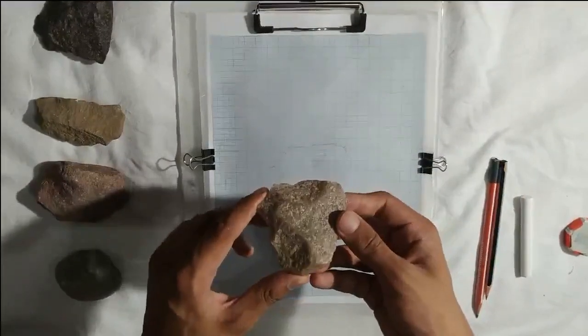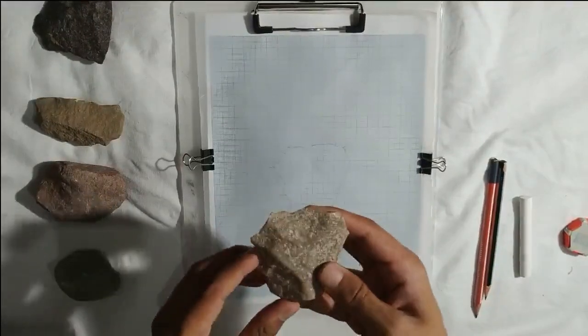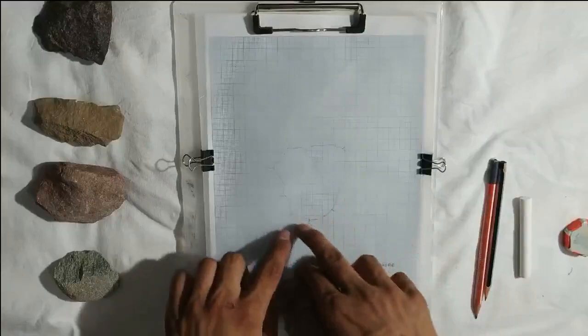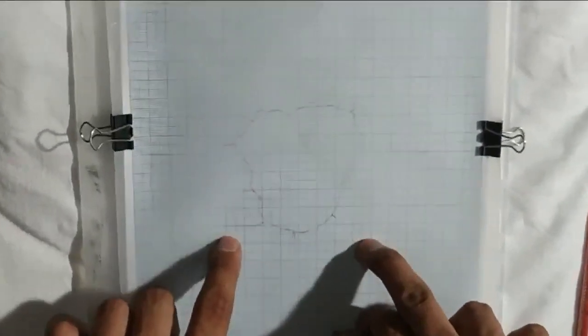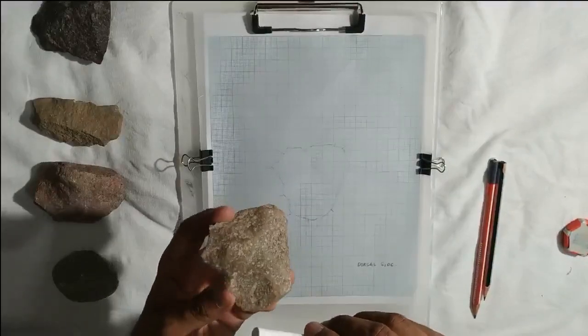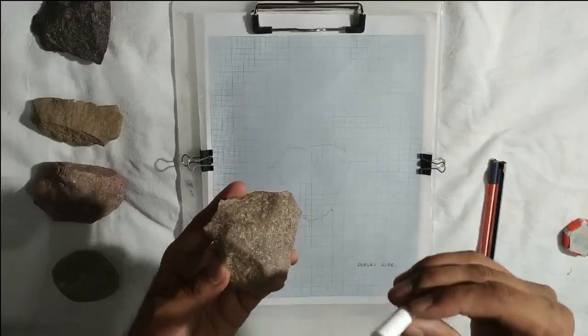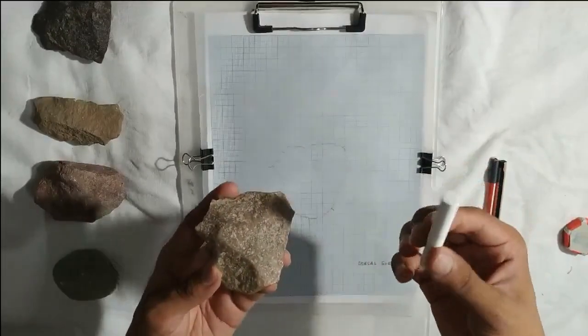Let us move towards drawing the flake and flake scars. I have already drawn the perimeter here. Now, demarcate the scar lines on the artifact with the chalk. It helps to highlight the ridges and then they can be drawn easily.